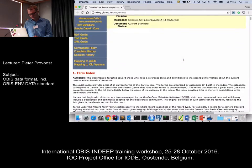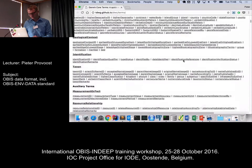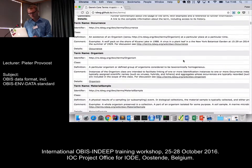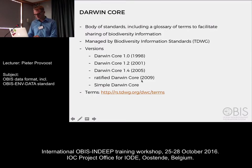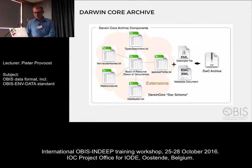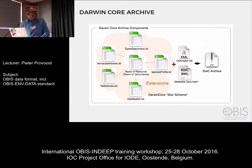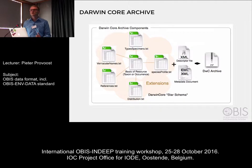There you have first an index of all the terms, and then for each term you have a definition and usually some examples as well. While Darwin Core is just a collection of terms, the Darwin Core archive standard describes how we can use these terms to make a self-contained data set that can be exchanged between people or between machines.